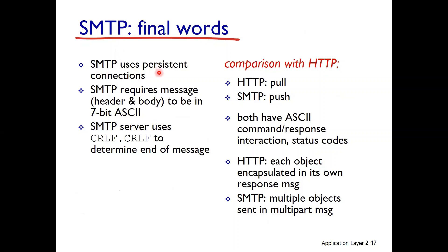SMTP uses persistent connections. SMTP requires messages to be in 7-bit ASCII. SMTP servers use CRLF.CRLF to determine the end of a message. In comparison with HTTP: HTTP pulls services — you pull a URL with a request — while SMTP pushes mail from client to server.